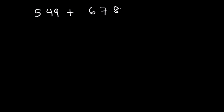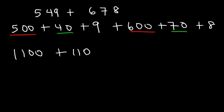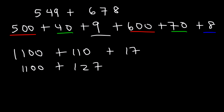Here's another example: 549 plus 678. Feel free to pause and try it. So 549 is 500 plus 40 plus 9, and 678 is 600 plus 70 plus 8. 500 plus 600: 5 plus 6 is 11, so that's 1100. 40 plus 70: 4 plus 7 is 11, so that's 110. And 9 plus 8 is 17. 110 plus 17 is 127. 1100 plus 127 is 1227. That's the final answer.